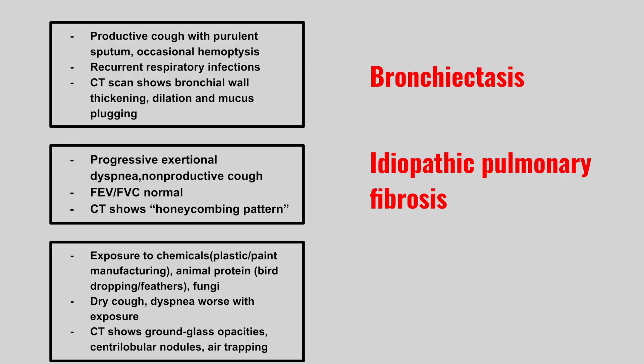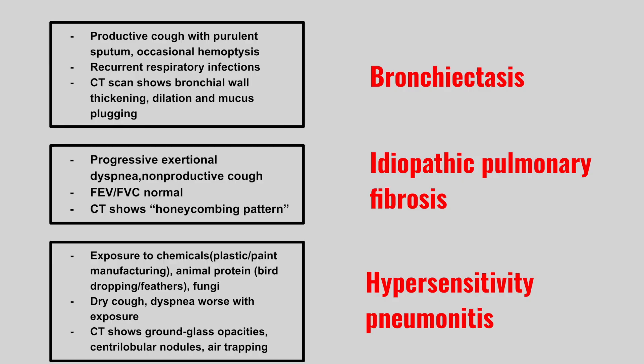Now we have a patient who has exposure to chemicals such as plastic, paint manufacturing, animal protein like bird droppings and feathers, or fungi, with a dry cough, dyspnea worse with the exposure, and CT shows ground glass opacities, centrilobular nodules, and air trapping. This is hypersensitivity pneumonitis. Remember, it's going to be worse when they're exposed to this agent, and when they go on vacation or away from the exposure, it gets better.